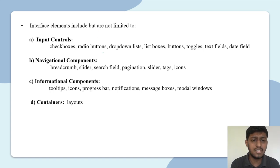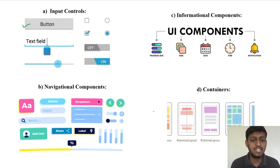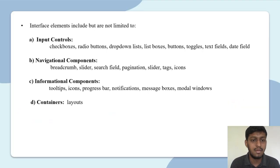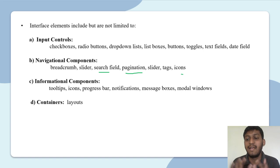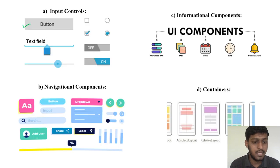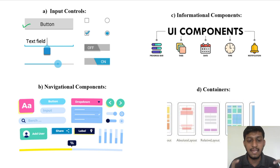There are also Navigation Components. In terms of navigation, you can see elements like a Slider, Search Field, Pagination, Tags, and Icons. These are just for show/design purposes — for example, Add User, Share — you click on them, but they are for the design. This is a navigation control.